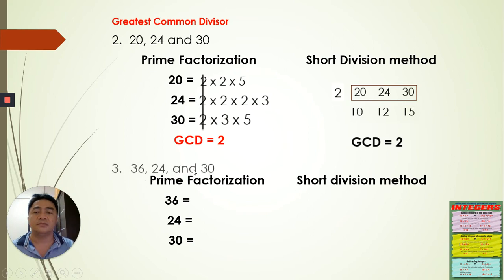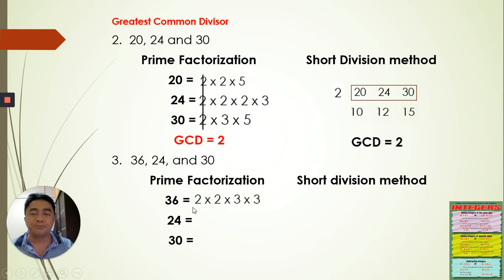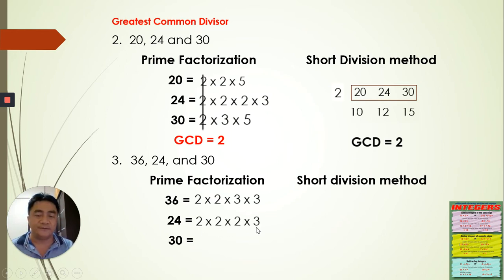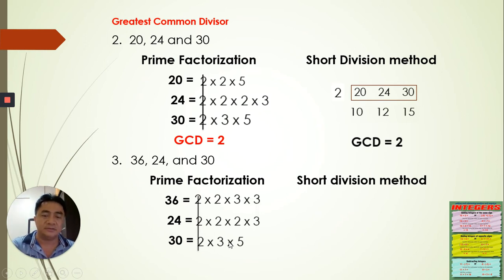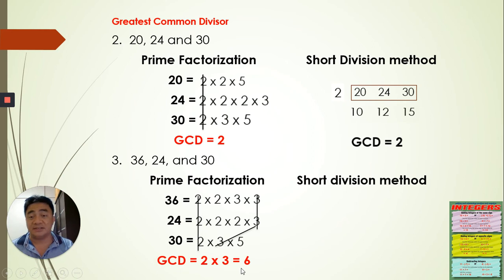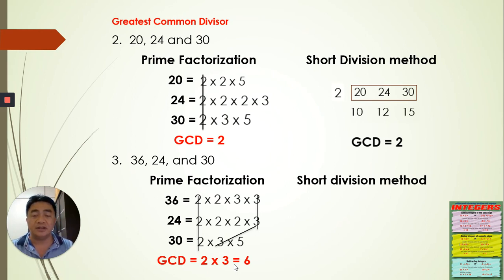The next example uses 36, 24, and 30. For prime factorization: 36 is 2 times 2 times 3 times 3; 24 is 2 times 2 times 6; and 30 is 2 times 3 times 5. We group all the twos together — one group — and then we also have a group of threes. We multiply those: 2 times 3 is 6. That's how you get the GCD or GCF for those numbers.